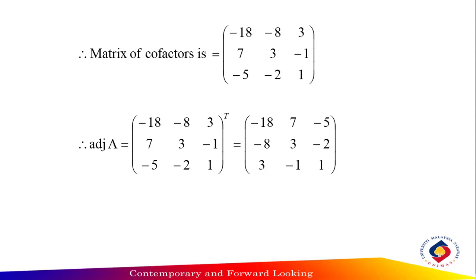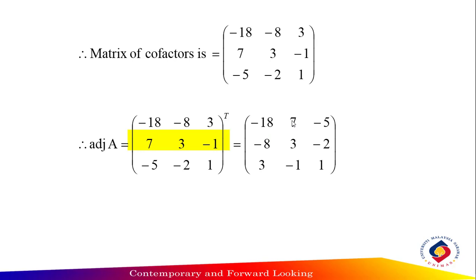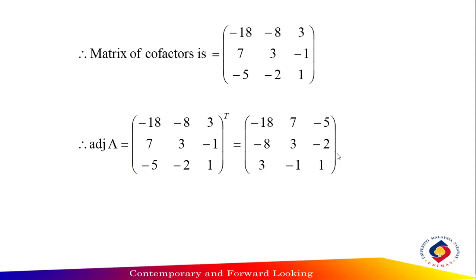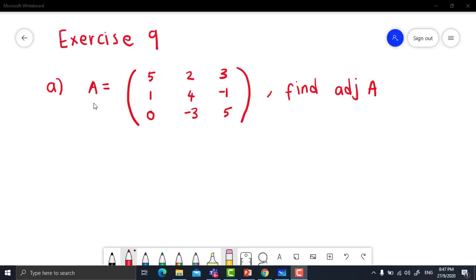Lastly, find the adjoint of matrix A. To find adjoint A, you need to transpose the matrix of cofactors. Transpose means interchange rows and columns. The first row of the matrix of cofactors becomes the first column of adjoint A, the second row becomes the second column, and the third row becomes the third column. So the answer for adjoint A is [-18, 7, -5; -8, 3, -2; 3, -1, 1].